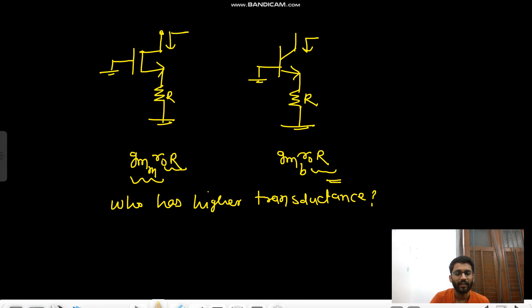Now for BJT, what is IC? IC is I_naught·e^(VBE/(eta·VT)), right?